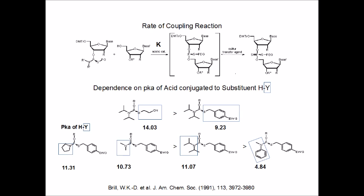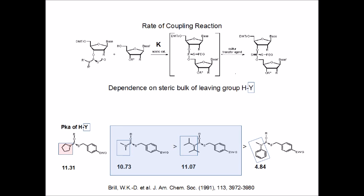The reason why thioamidites are different from phosphoramidites lies in the kinetics of the coupling reaction, as seen on the top of this slide. The reaction of a thioamidite giving a thiophosphate is directly determined by the basicity of the amine leaving group: the more basic the amine, the more rapid the coupling reaction. The coupling rate is also determined by the steric bulk of the amine leaving group; the greater the bulk, the lower the reaction rate.